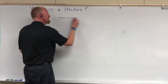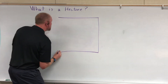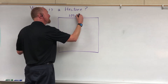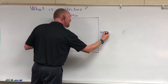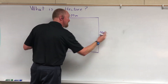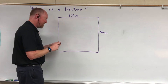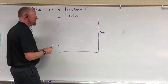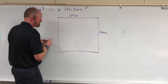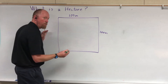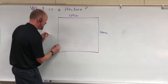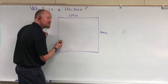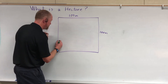Well, a hectare is equal to a square 100 meters by 100 meters, which is very different from an acre. An acre is equal to a rectangle which is exactly 66 feet by 660 feet.